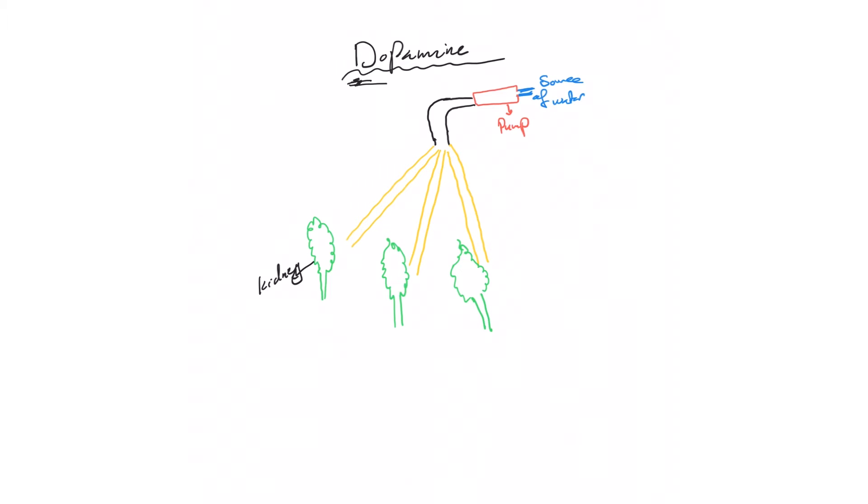The main indication where we cannot use norepinephrine or prefer dopamine is when you have somebody who has hypotension and bradycardia—I'm talking significant bradycardia here. Remember, norepinephrine has a balanced effect on the heart rate and may cause mild bradycardia. So whenever you have hypotension with bradycardia, dopamine can really be the option to go for.